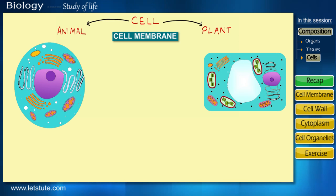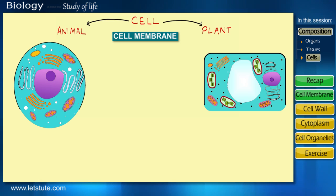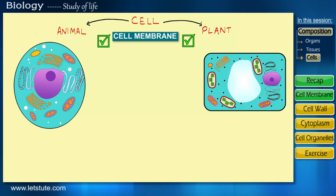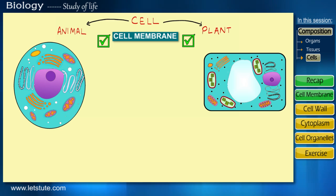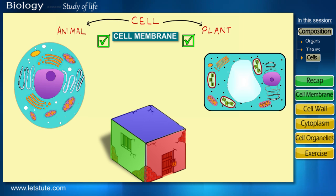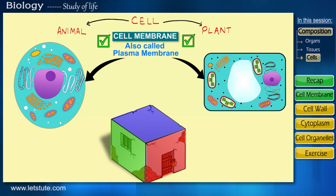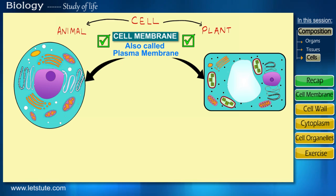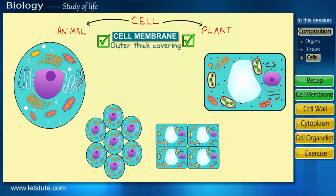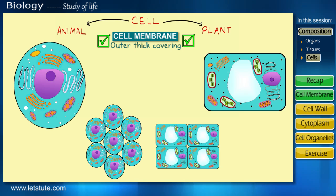So let's start with the first one — that is the cell membrane. Now do you see this outer covering which is holding all the contents together in both types of cells? This lining or covering that helps to compartmentalize a cell is called its cell membrane. So just like a room is contained by walls, the components of a cell are contained by its cell membrane, which is also called the plasma membrane. To define it clearly, it's the outer covering of the cell which separates one cell from the other and also separates the cell from its outer environment.